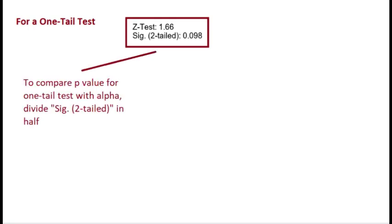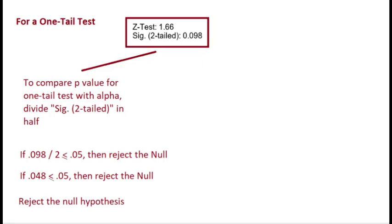The first way is you just take that significance two-tailed and you divide it in half. So you take that 0.098, divide it in half. You compare it with the alpha level 0.05. And since it's less than or equal to 0.05, because 0.098 divided in half is 0.049, we reject the null hypothesis.